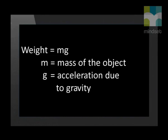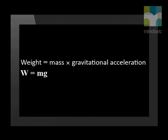We can therefore calculate the weight of an object on earth using this equation: weight equals the mass of the object multiplied by the acceleration due to gravity. If we want to calculate the weight of an object on earth, we use gravity as 9.8 meters per second squared. Let's calculate the weight of the same object on earth and then on the moon.